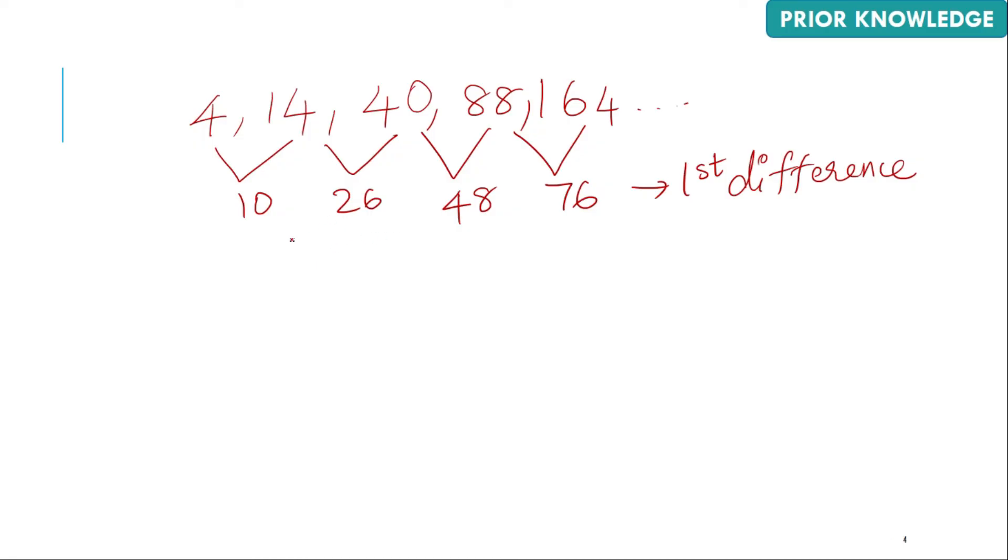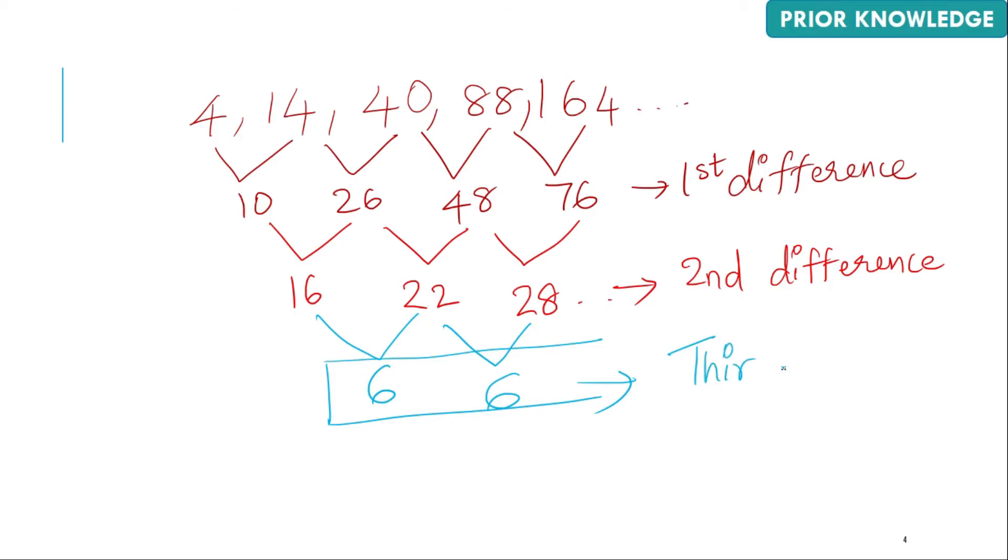Finding the second difference: 26 minus 10, I have 16; 48 minus 26, I have 22; 76 minus 48 is 28, and again I can see my second difference is not a constant value. I look for the third difference: 22 minus 16 giving me 6, 28 minus 22 giving me 6. So here I can see that my third difference is a constant value, 6.